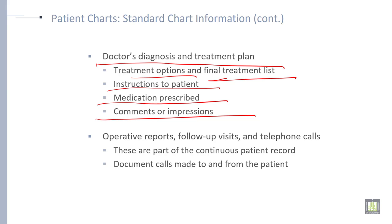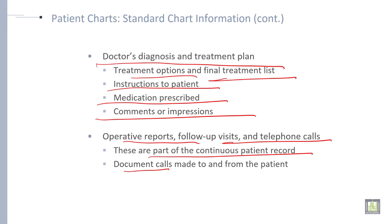Operative reports, follow-up visits, and telephone calls — these are part of the continuous patient record. Document all calls made to and from the patient.